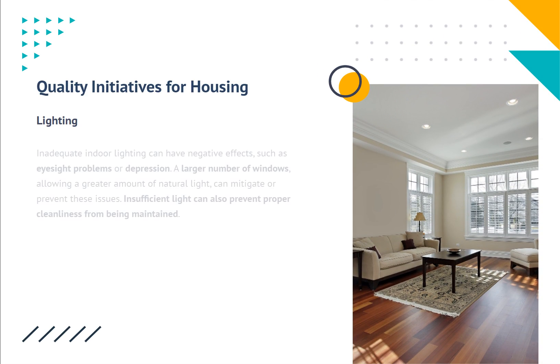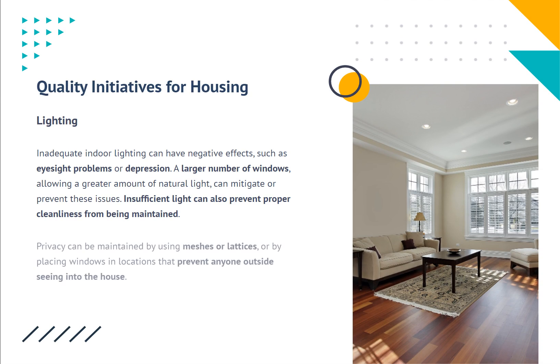Lighting. Inadequate indoor lighting can have negative effects, such as eyesight problems or depression. A larger number of windows, allowing a greater amount of natural light, can mitigate or prevent these issues. Insufficient light can also prevent proper cleanliness from being maintained. Privacy can be maintained by using meshes or lattices, or by placing windows in locations that prevent anyone outside seeing into the house.